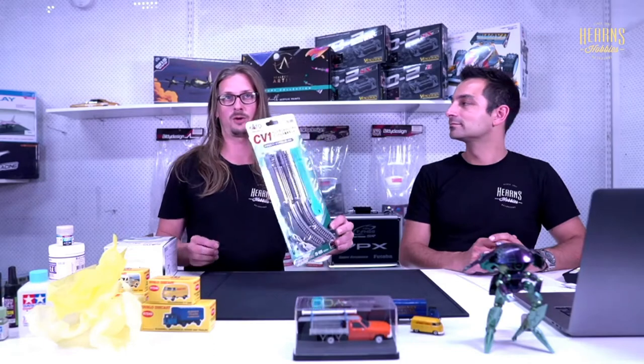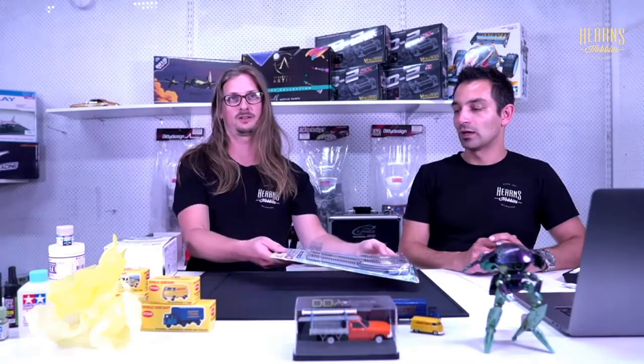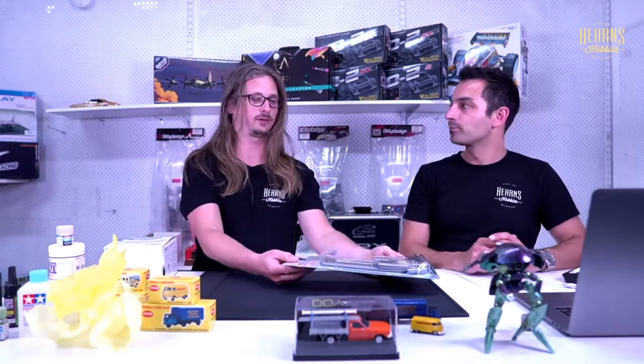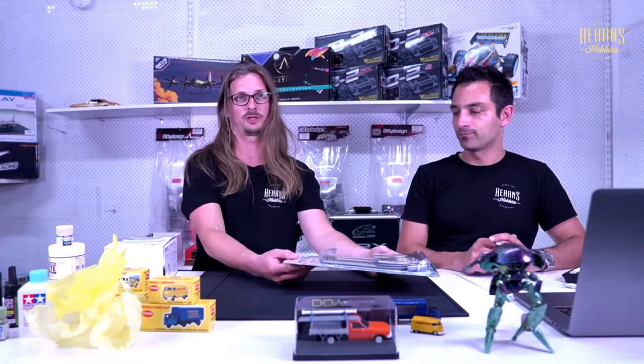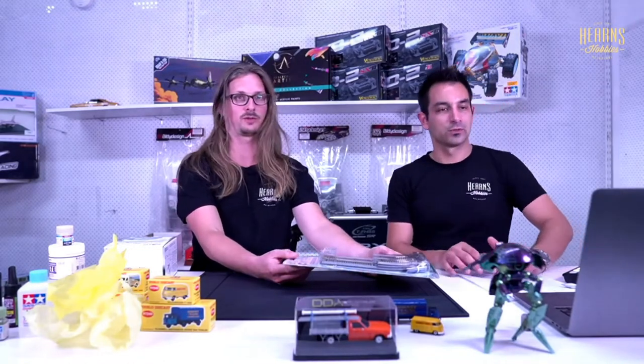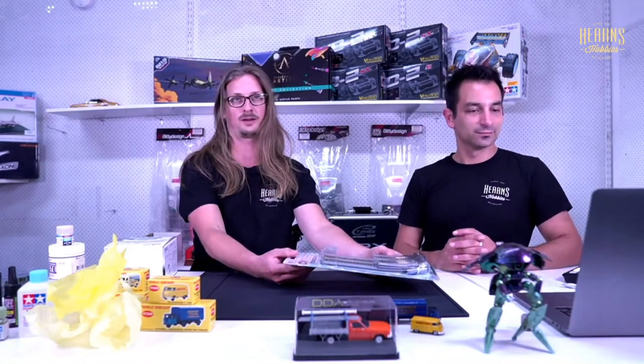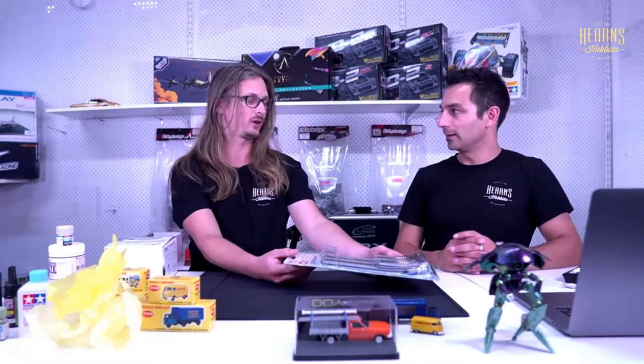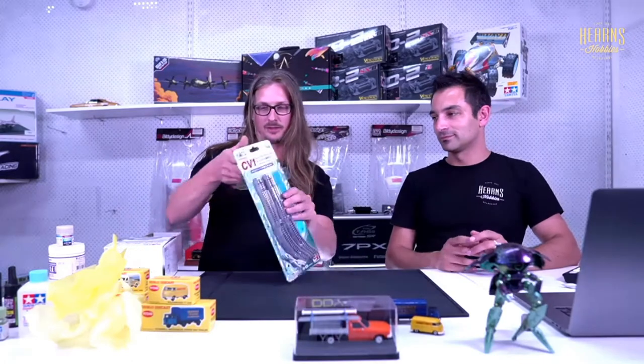I was just going to quickly demonstrate the CV-1. This is a small track set with very small radius turns. So this is a really good way for somebody to get started with a very, very small layout that they could have on like a desk or a coffee table. And then we'll open this up actually and have a look.